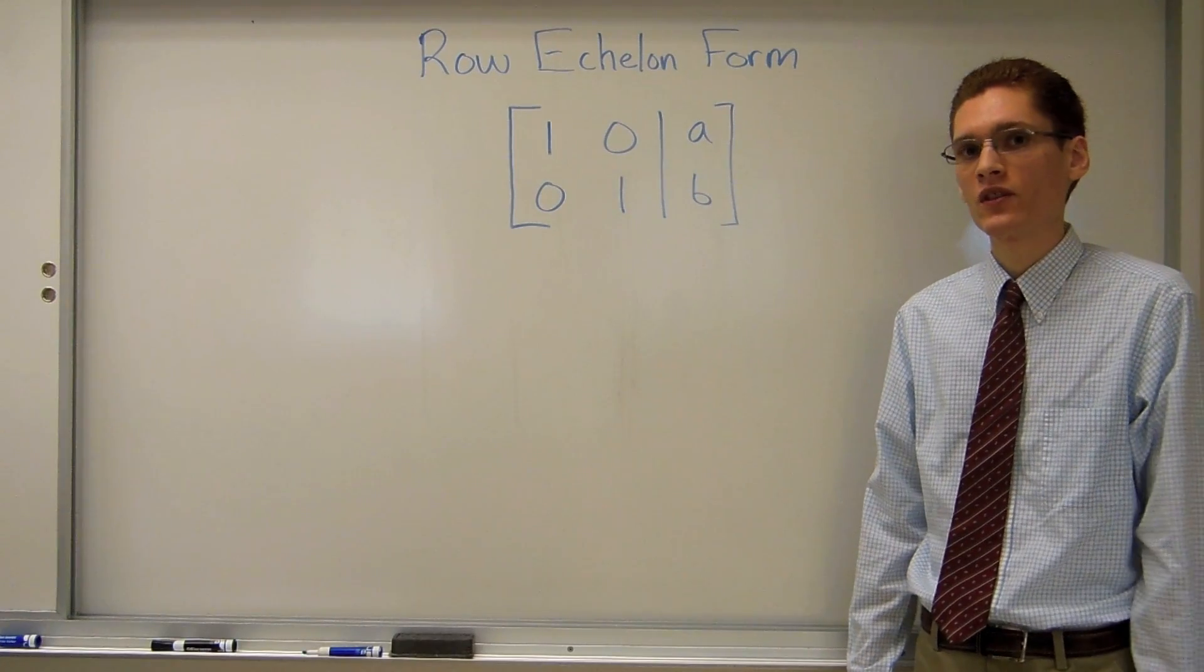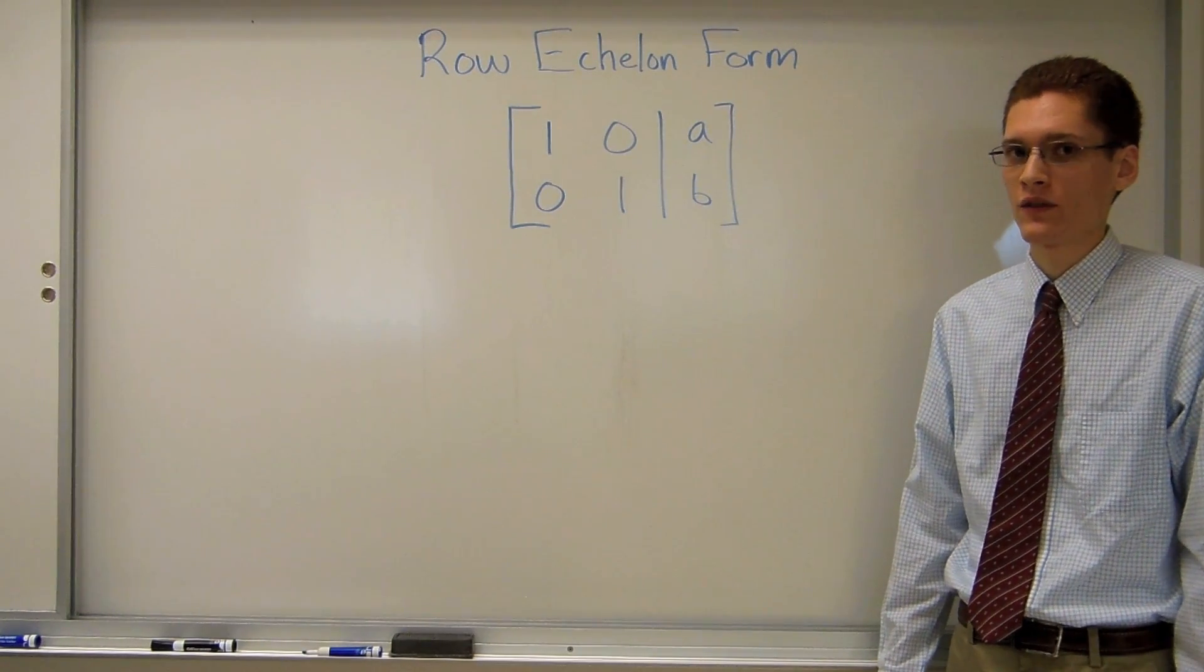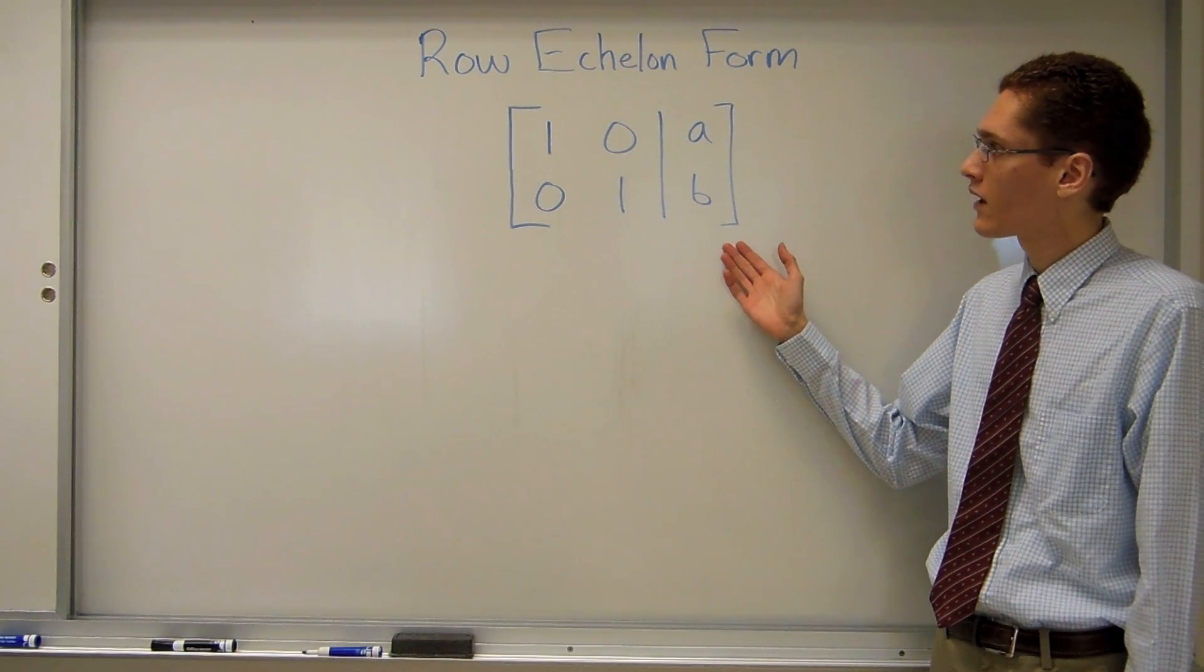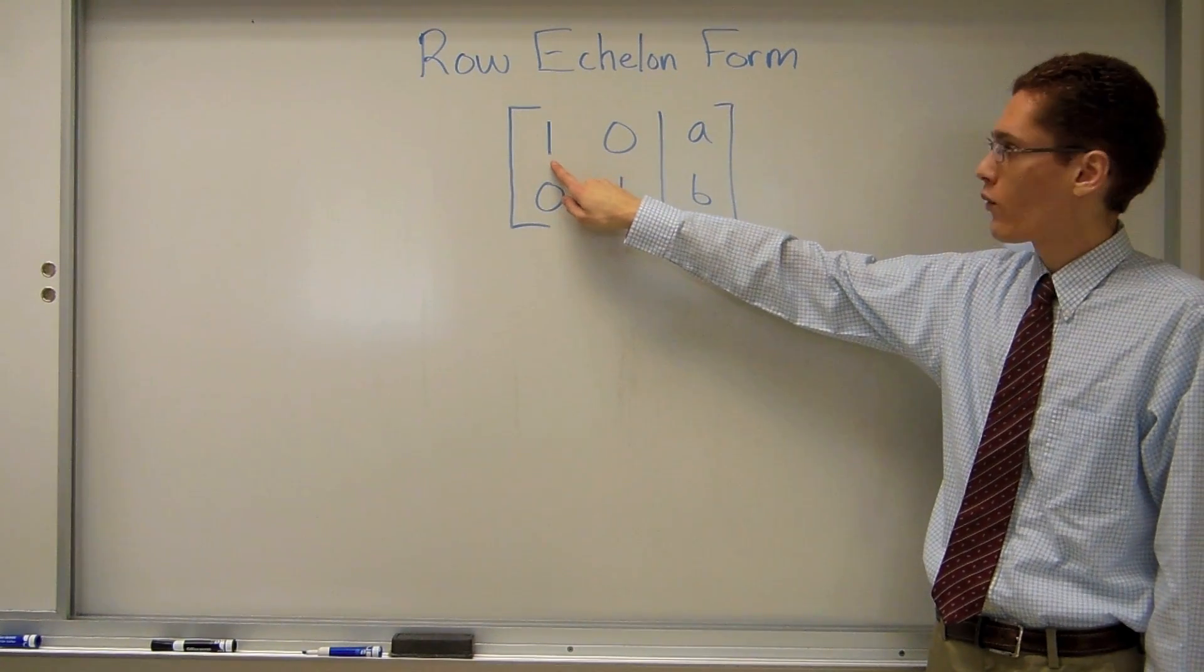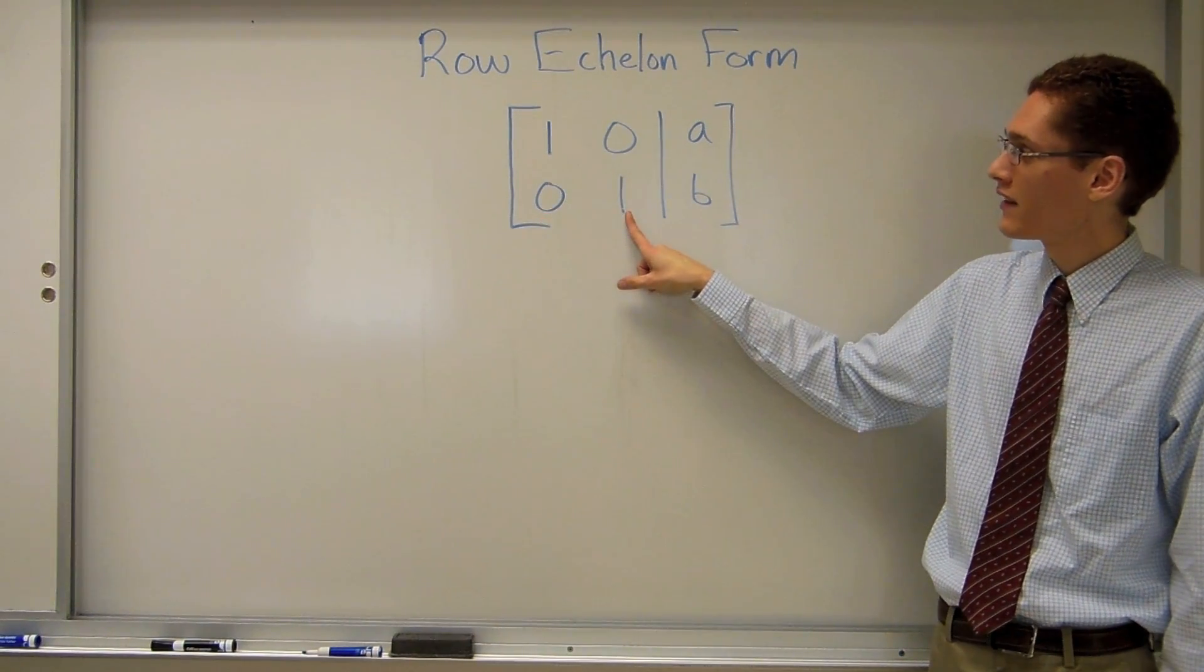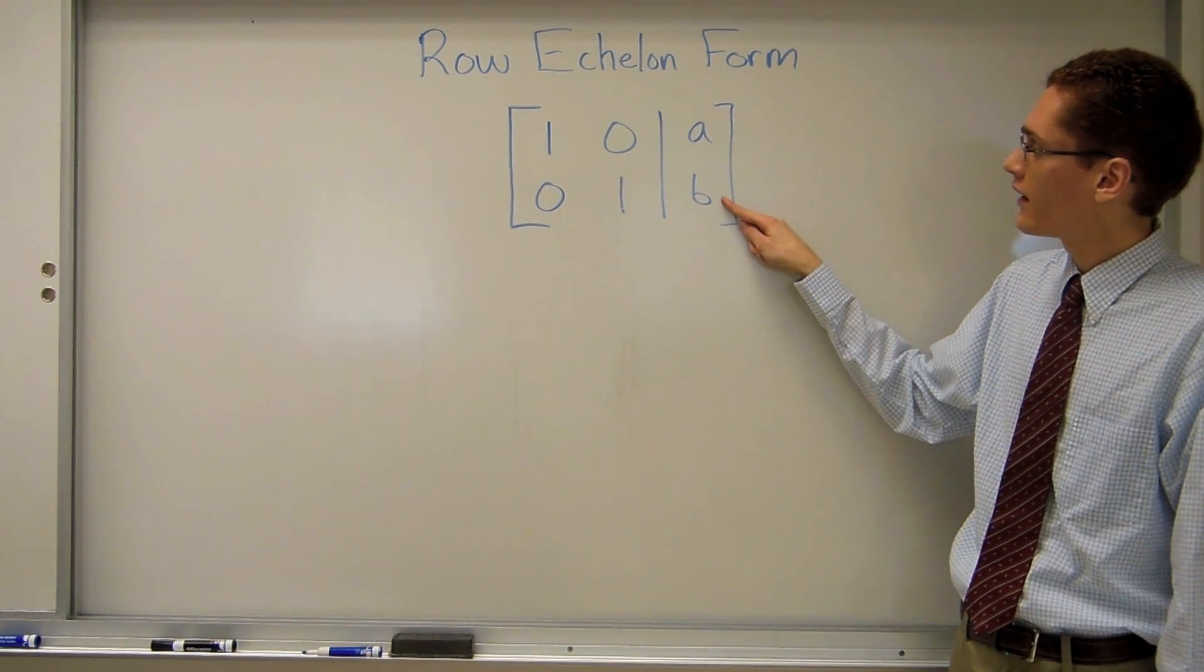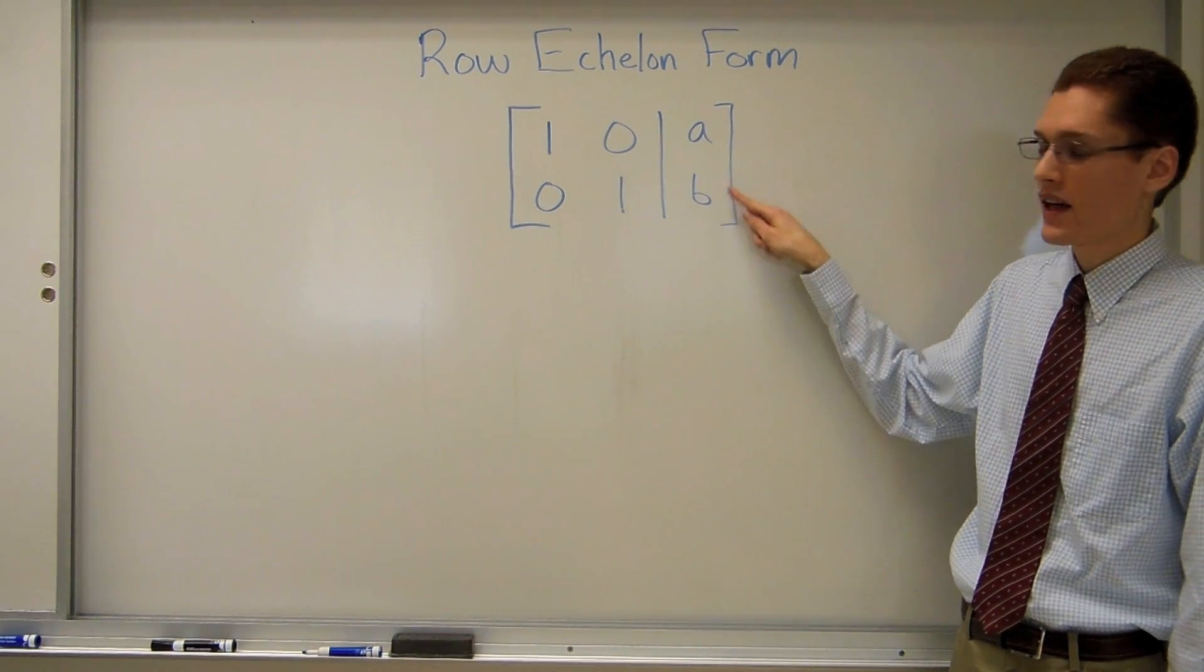My next step is to use the matrix row operations to get the matrix into row echelon form, which for a 2 by 3 matrix looks like this. In the first row, first column, we have a 1. First row, second column, a 0. Second row, first column, a 0. And second row, second column, a 1. And then the numbers on the other side of the line, which represents the equal sign, could be anything.